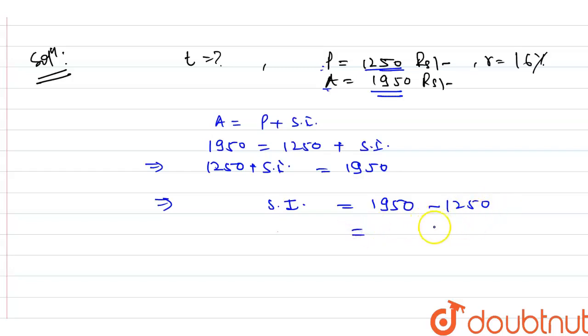So it will be 0 minus 0, 5 minus 5, 0, 9 minus 2 will be 7, 1 minus 1. So 700 rupees, it will be our simple interest.